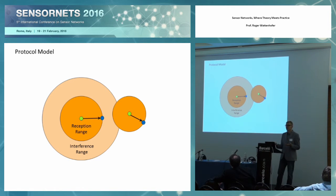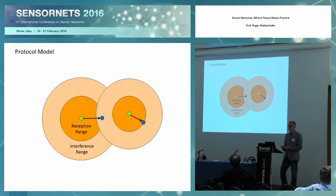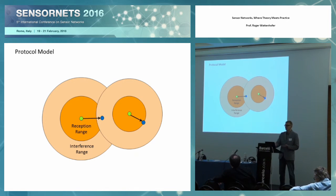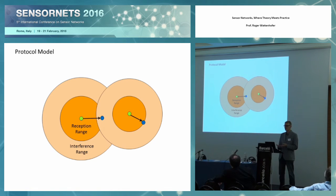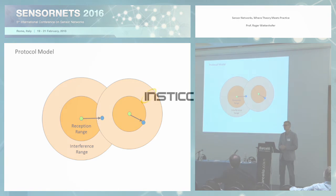It still knows something is going on, and in particular it will be disturbed by this interference. For instance, if the right green node is transmitting at the same time as the left green node, then the left blue node cannot get the signal anymore — cannot decode the message from its neighbor — because it's in the interference range of the green node.